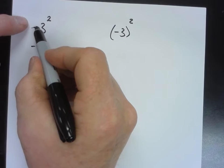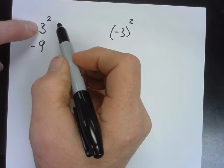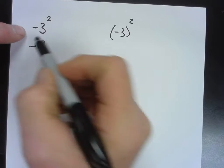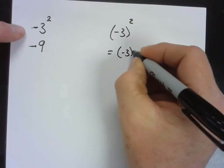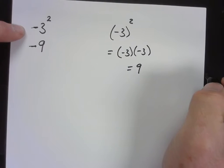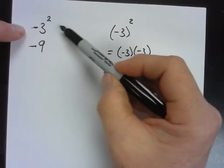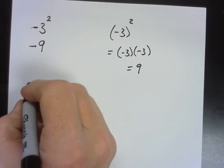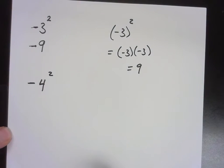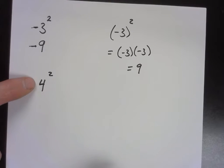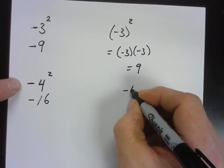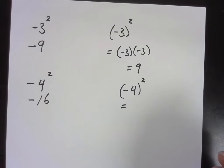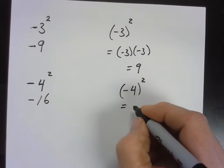I do the exponent first — 9 — then worry about the subtraction. But over here with parentheses it's a different story: negative 3 times negative 3 is positive 9. There's a big difference between those two. Parentheses make a difference. The opposite of 4 squared: that's 16, so the opposite is negative 16. Written with parentheses: negative 4 times negative 4 is positive 16.